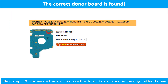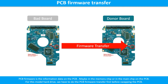We found the correct donor PCB board for the hard drive, but this is only the first step. The next step is we have to do the PCB board firmware transfer to make the donor board work on the original hard drive. For this model hard drive, we have to do the PCB board firmware transfer first, then we swap the PCB board. Otherwise, the new board will not work on the original hard drive.